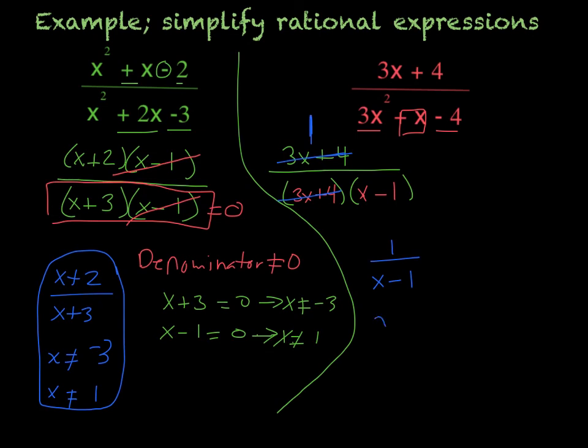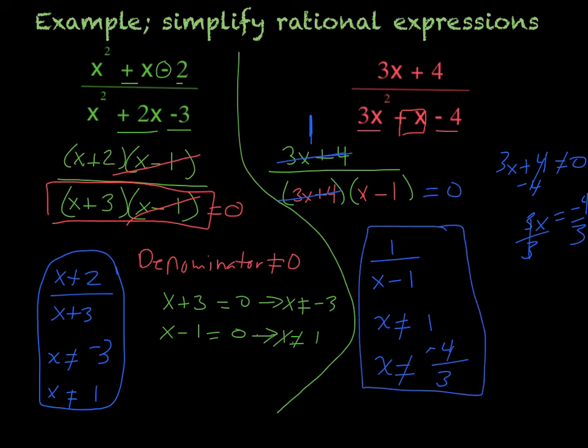And then we have to figure out what x cannot be. X cannot equal wherever the denominator equals 0. So x cannot equal 1 and x cannot equal, if we subtract 3x plus 4 equals 0, subtract the 4, 3x equals negative 4, divide by 3. So x cannot equal negative 4 over 3. So that would be your entire answer. X cannot equal 1, x cannot equal negative 4 thirds, but x equals 1 divided by x minus 1.